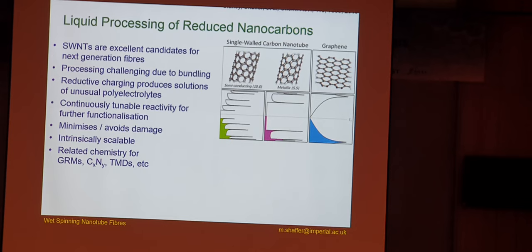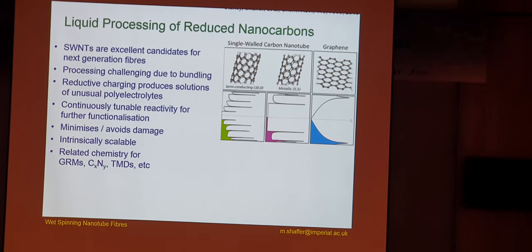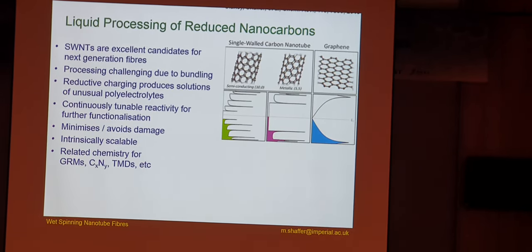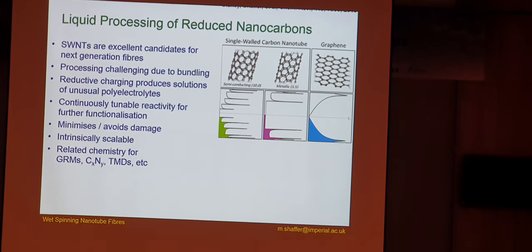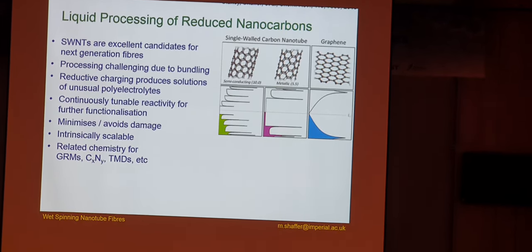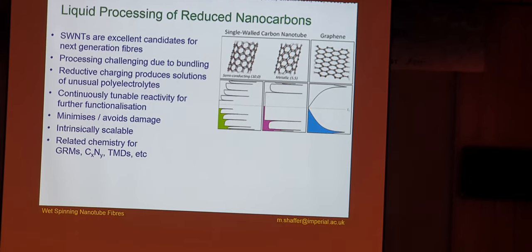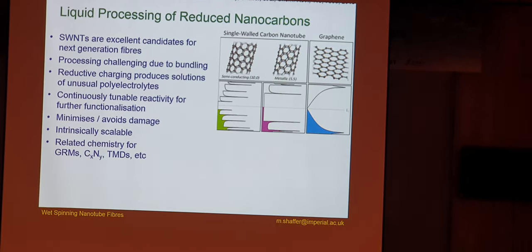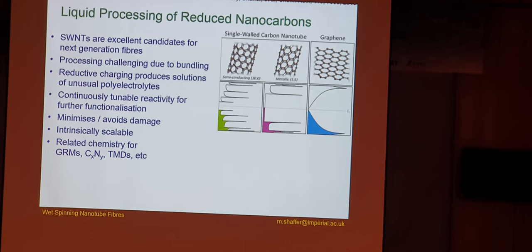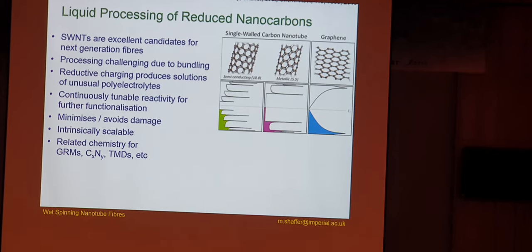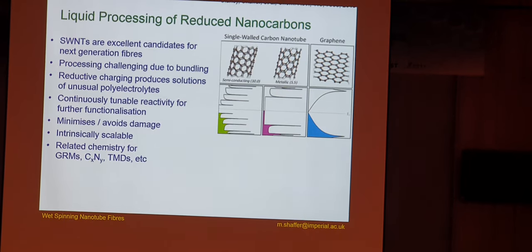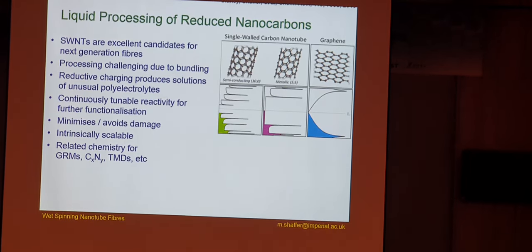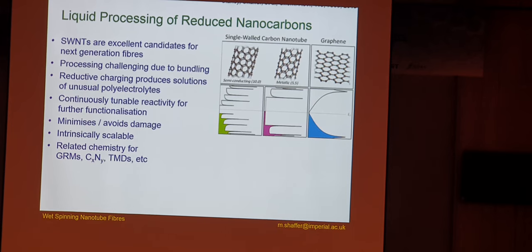So in the acid case, you protonate the nanotubes, you make a positive charge, they repel each other, they form a nice dispersion, you get a liquid crystalline phase. Instead of introducing a positive charge by protonation, you use a negative charge by introducing electrons, you can get a similar sort of behavior. So we've been looking at this reductive approach to dissolving nanotubes and removing the bundling from the system.